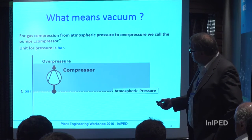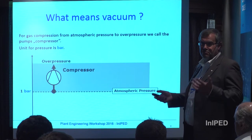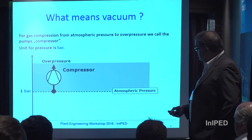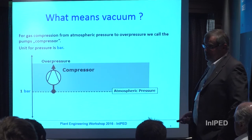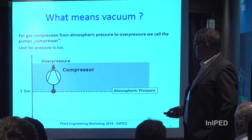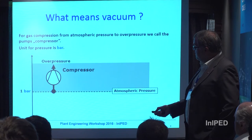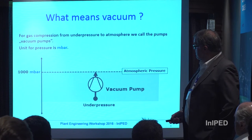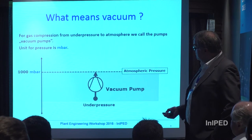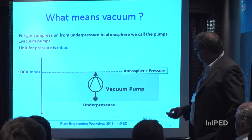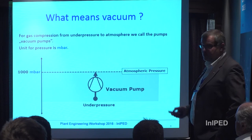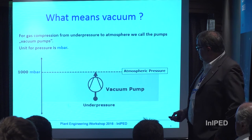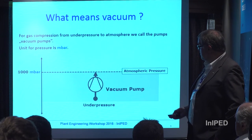When do we talk about a compressor and when about a vacuum pump? The machine looks very similar and is more or less the same. We talk about a compressor when, on the suction side, we are in the atmospheric pressure range — compressing gas from atmospheric pressure to overpressure. Typically we use bar as a unit. When we talk about vacuum, we mean a pump which handles pressure below atmospheric pressure and compresses it up to atmospheric pressure. In that case, we normally talk about millibar.